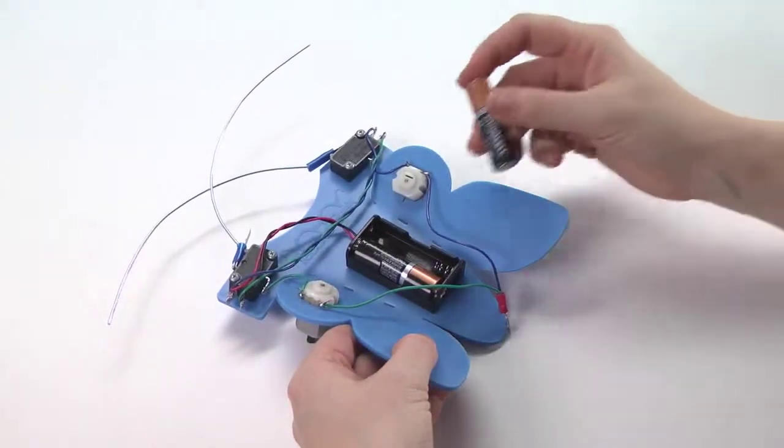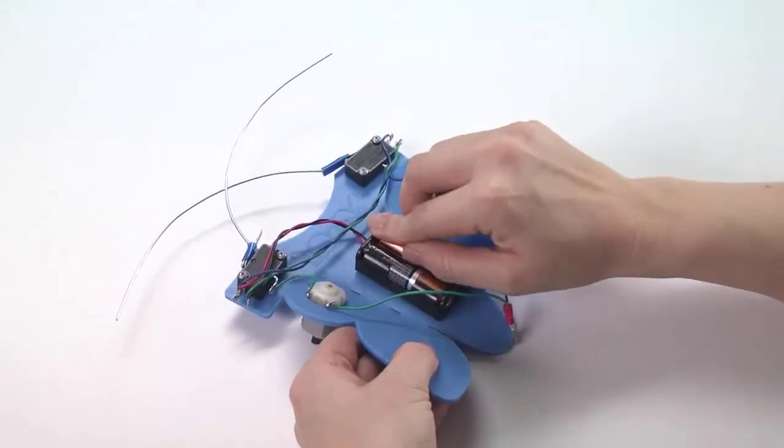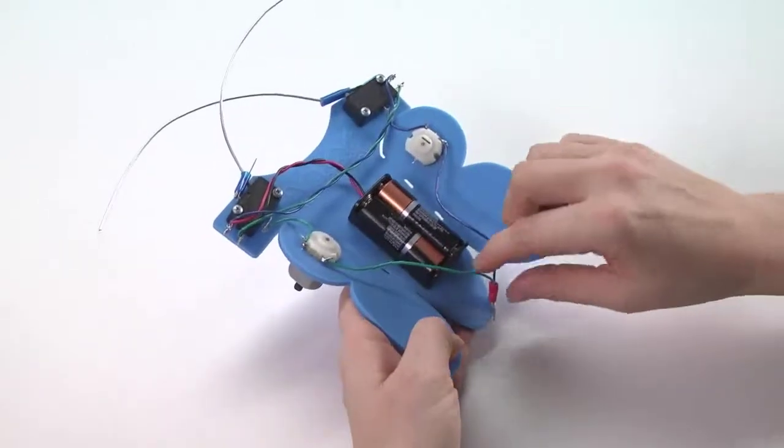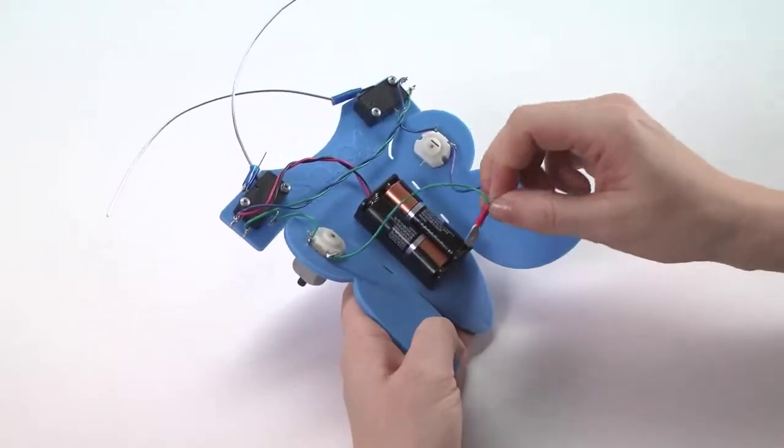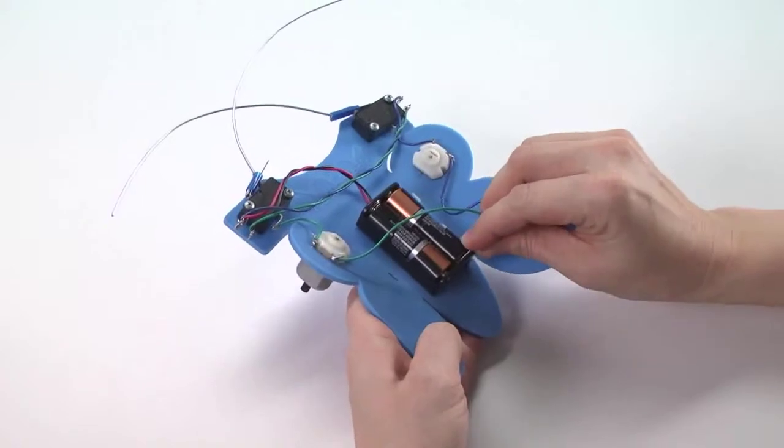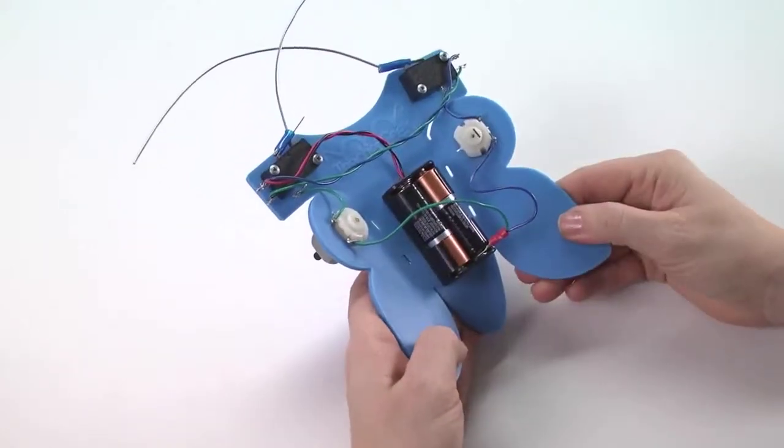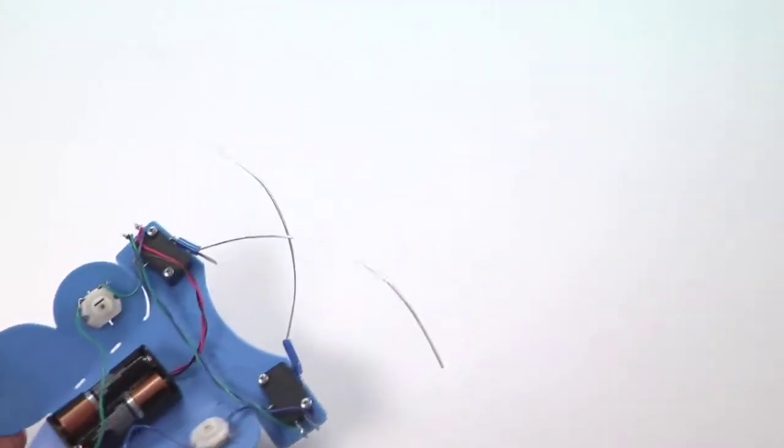Once the circuit is set, insert the batteries and connect the final wire lead. The students will find very quickly if they tested the circuit properly.